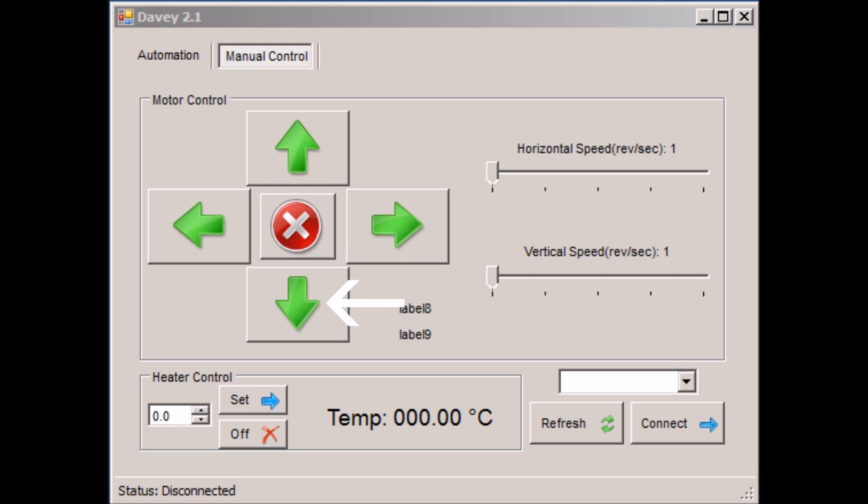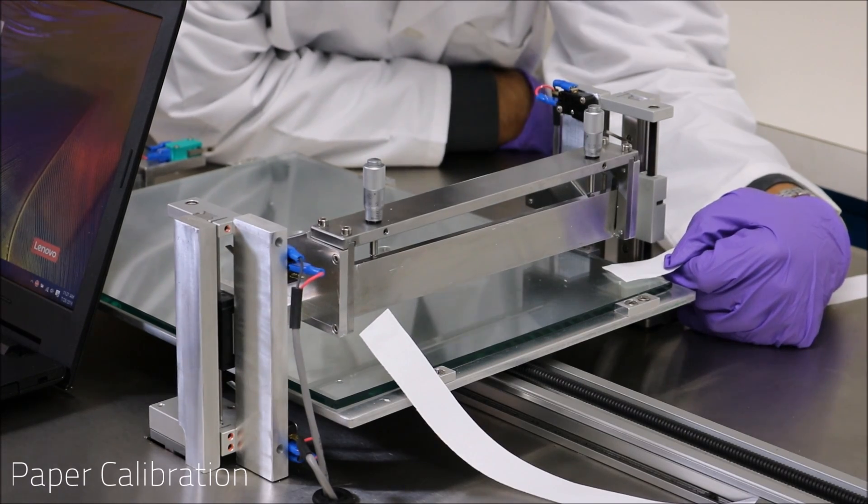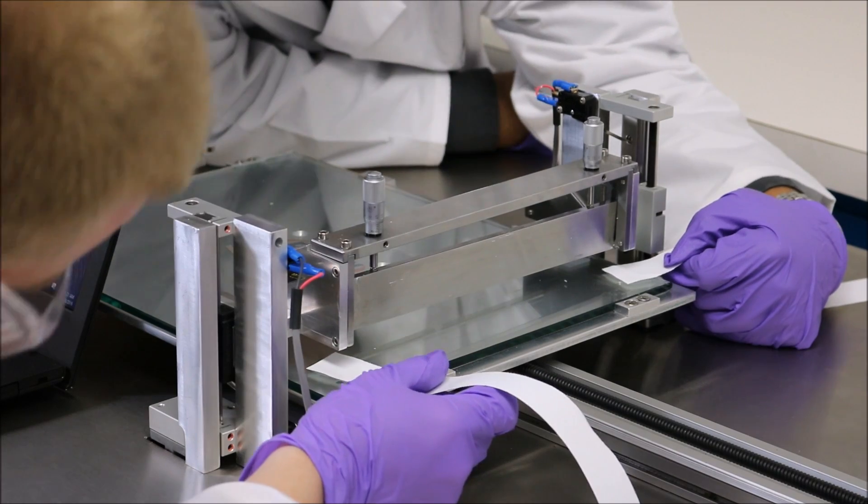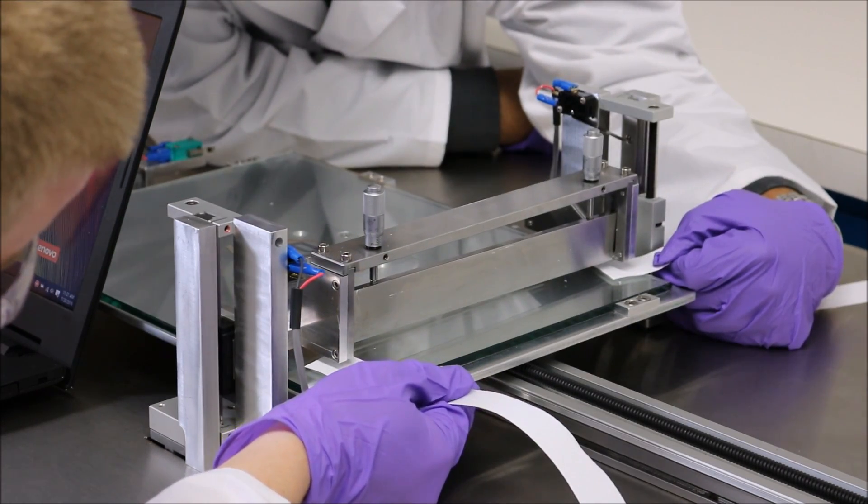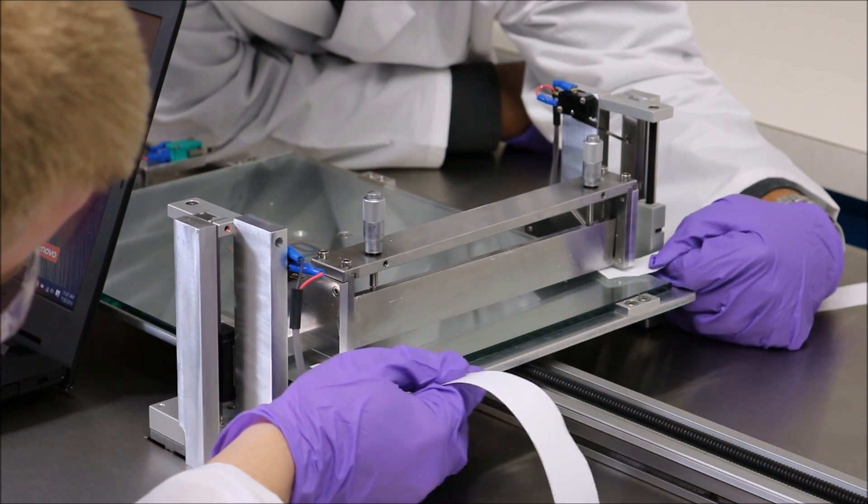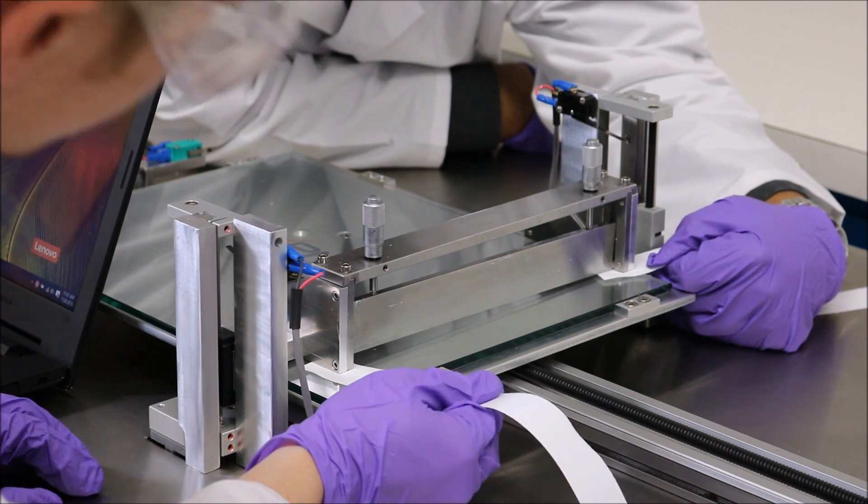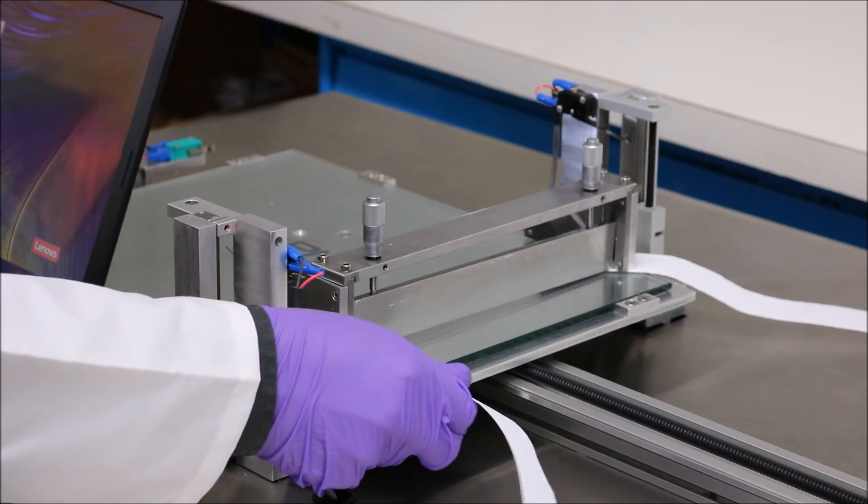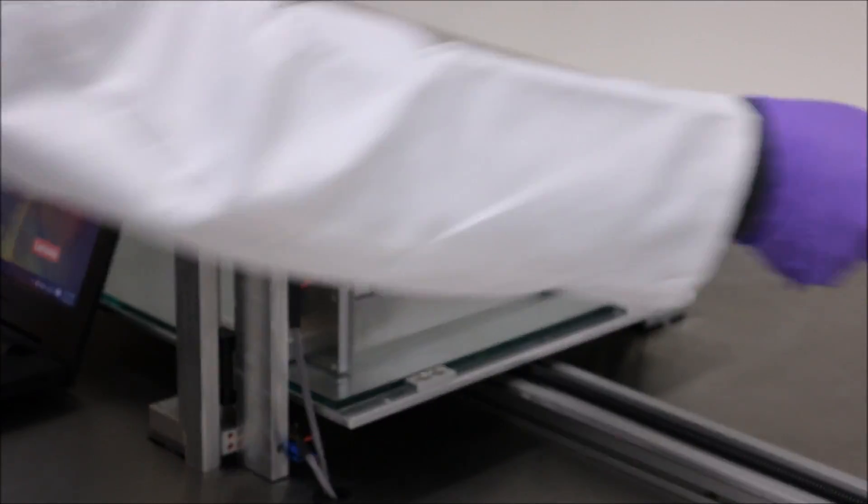At this point we will lower the doctor's blade down and calibrate our zero position with some A4 paper strips. The goal here is to lower down the doctor's blade so that the paper strips are difficult to pull out but not completely stuck. As you can see, there is some resistance while trying to pull it out, but as long as it does not tear, that is what we want.